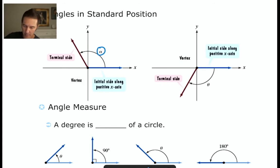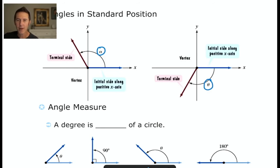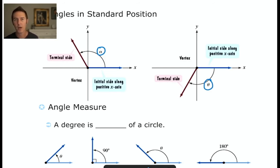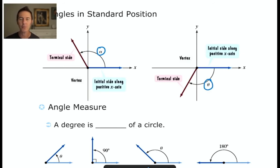This angle is denoted by alpha; the one to the right is denoted by theta. In the first example, alpha has a positive angle measure because the terminal side has been rotated counterclockwise away from the positive x-axis. In the second example, theta must be negative because the terminal side has rotated clockwise — downward — away from the initial side.